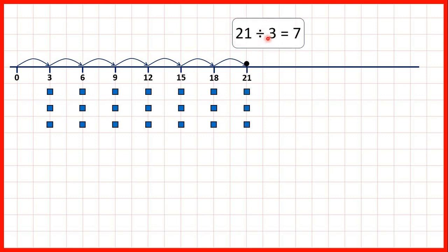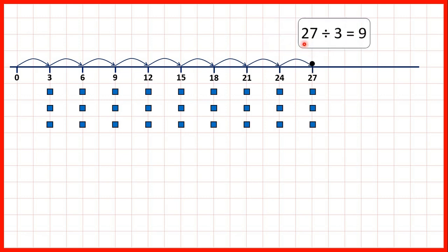Twenty-one divided by three is seven. Twenty-four divided by three is eight. Twenty-seven divided by three is nine.